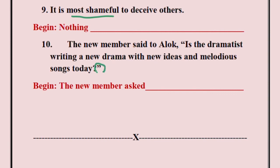Coming to sentence number ten, the last one — this is a big one but very easy. This is a direct and indirect form of a sentence. The direct form is given; you are told to write it in the indirect form. The new member said to Aalok — this is a question sentence, so you write: The new member asked Aalok. It does not start with a WH word, so you add 'if' or 'whether'. The full sentence: The new member asked Aalok if the dramatist was writing a new drama with new ideas and melodious songs that day. It will not finish with a question mark — you end it with a full stop.